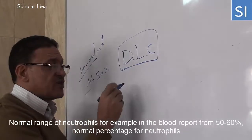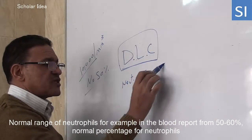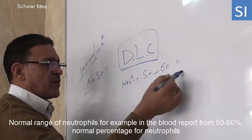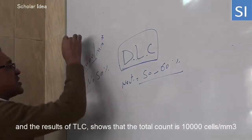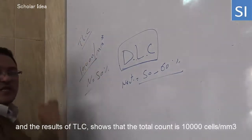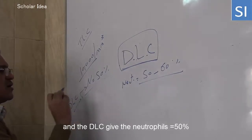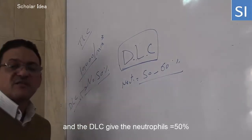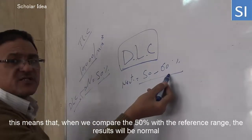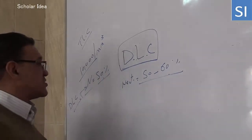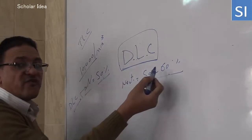The normal range of neutrophils in the blood report is from 50 to 60 percent. If the total leukocyte count is 10,000 and the differential leukocyte count gives a value of 50 percent, when we compare the 50 percent with the reference range, the result appears to be at the lower end because 50 percent is the lower boundary of the 50 to 60 percent range.